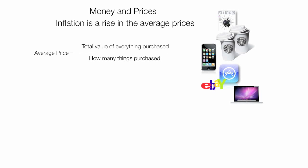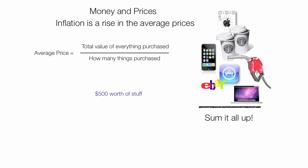You take everything you buy, sum it up, and divide by the number of things purchased — that gives you your average price. So let's imagine you buy $500 worth of stuff and 10 different items: your average price is $50. Next month, you buy the same 10 items but the price is $600, so your average price is now $60 — it rose by $10.